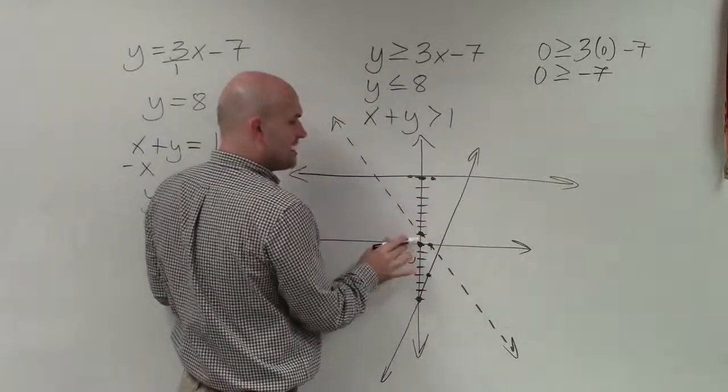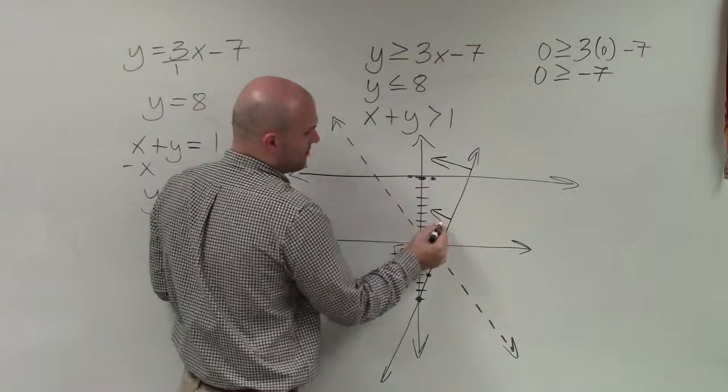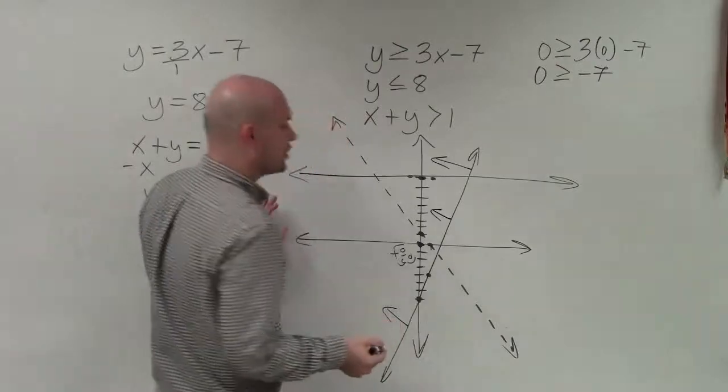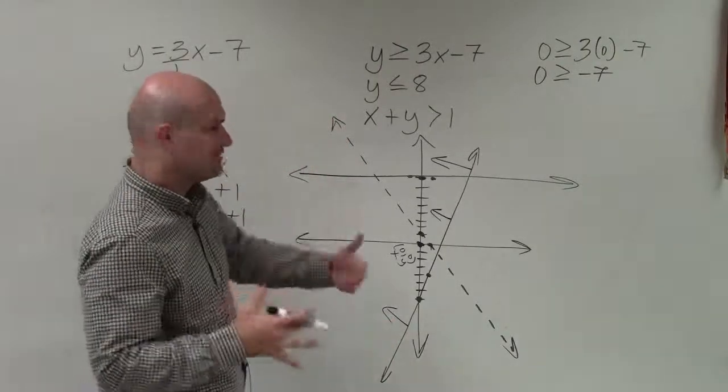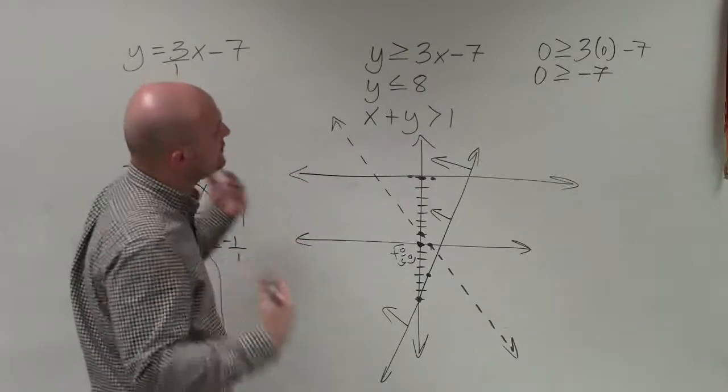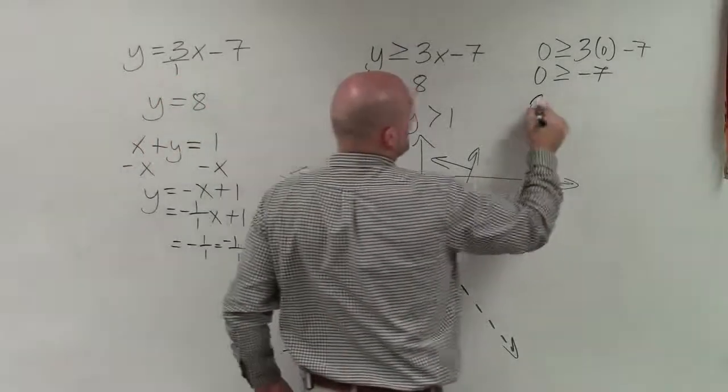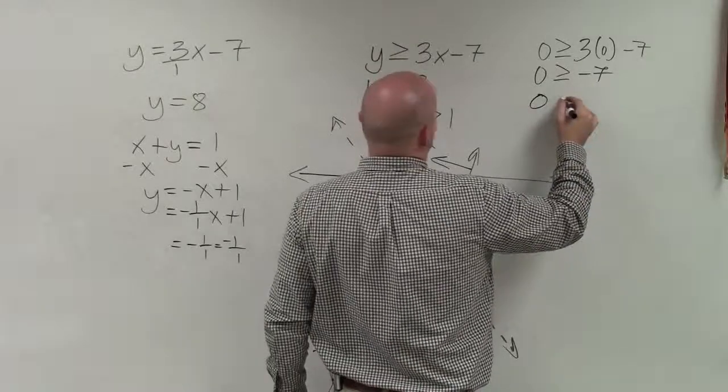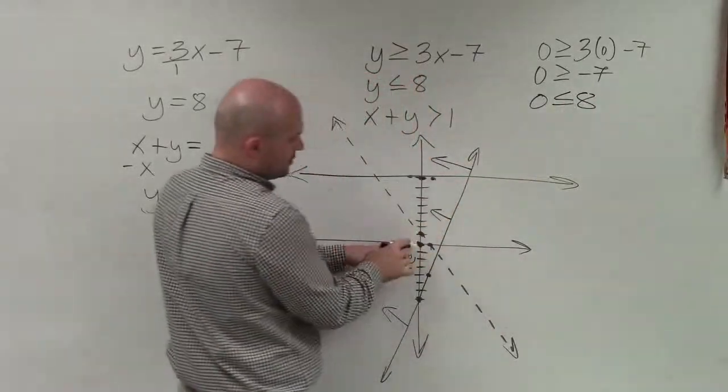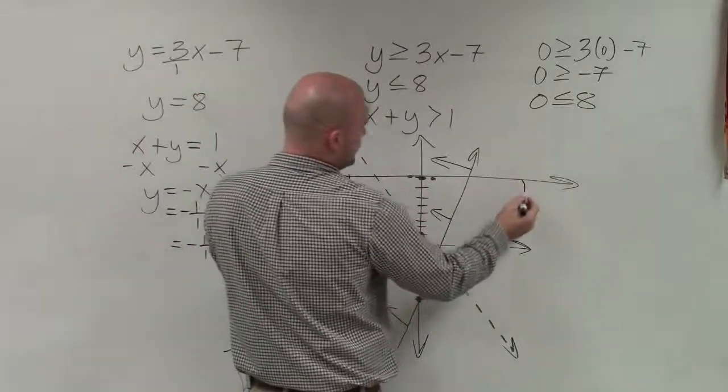So since it's true and our test point is above the line, that means all points that are above this boundary line are going to be true. So instead of shading, I'm just going to put some arrows so I know where to shade once I've completed the boundary lines for all of them. The next one, I don't have an x to plug in. So I can just plug 0 in for y. And again, that is true. So I go look at my test point. That is true for this boundary line. So I'm going to shade below.